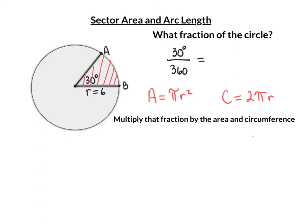Then you're going to find the length of this arc from A to B — not the measure in degrees, but the actual length in feet, centimeters, meters, or inches, whatever you're measuring in. To do that, we take a fraction of the circle. Take your angle, whatever it is, and put it over 360. It's that fraction of the entire area and that fraction of the circumference.